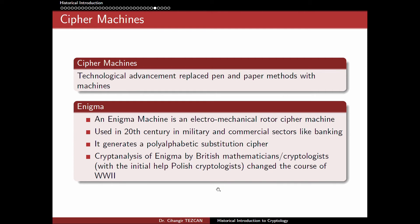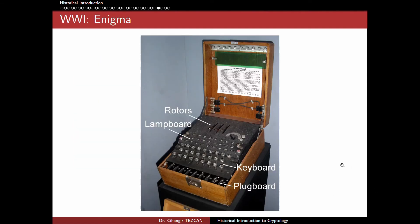The cryptanalysis of Enigma by British mathematicians changed the course of the Second World War. During this cryptanalysis they had initial help from Polish cryptologists. The Enigma machine works like a typewriter — you write your plaintext using the keyboard, but depending on the positions of the rotors, when you press a letter it prints a different letter. The rotor positions change constantly, so pressing A might produce C the first time and something else the next time.